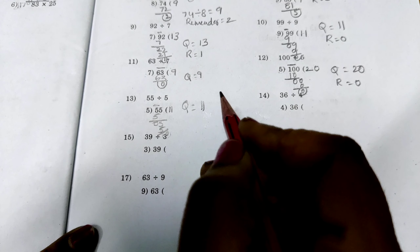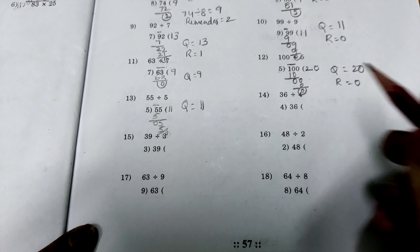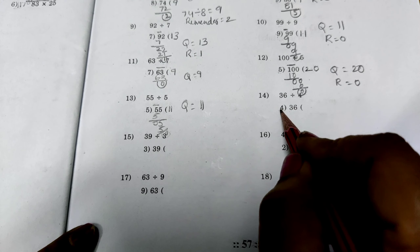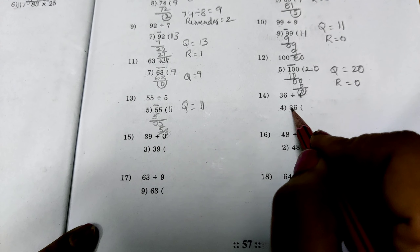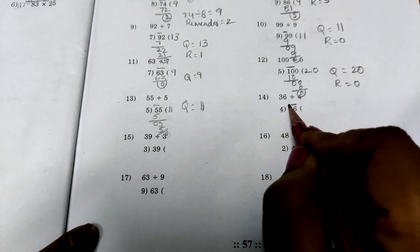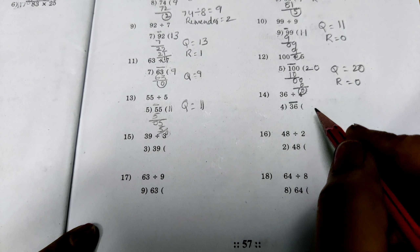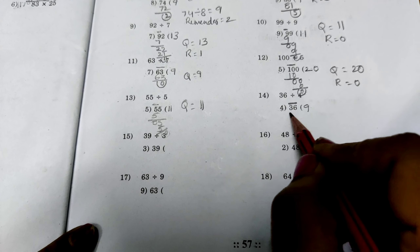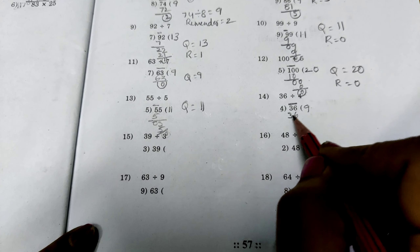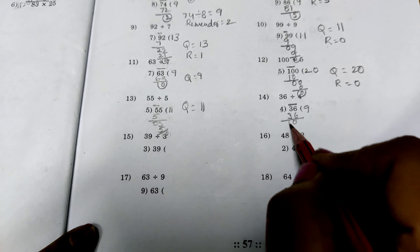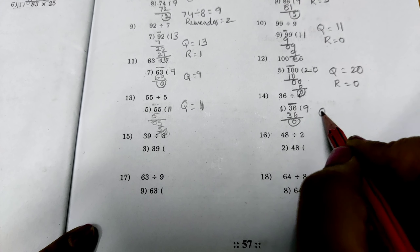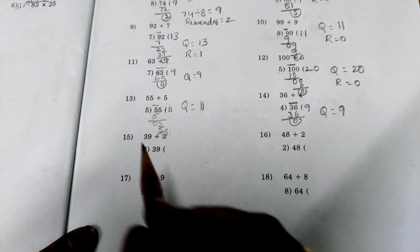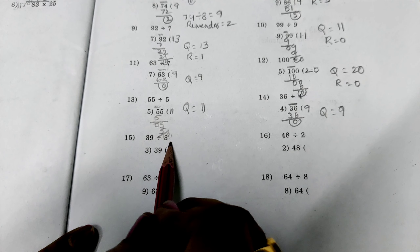36 divided by 4. Here we have to take 36. How many times can we subtract 4 from 36? 9 times. 4 nines are 36. 6 minus 6 is 0. 3 minus 3 is 0. Quotient is 9. So 36 divided by 4 is 9.